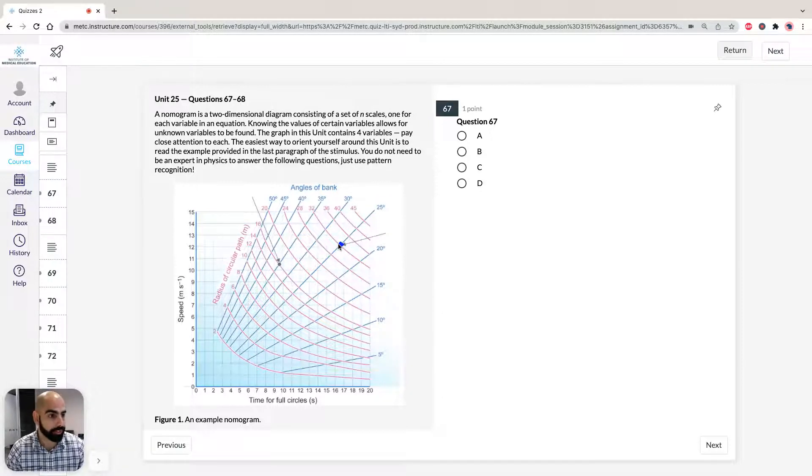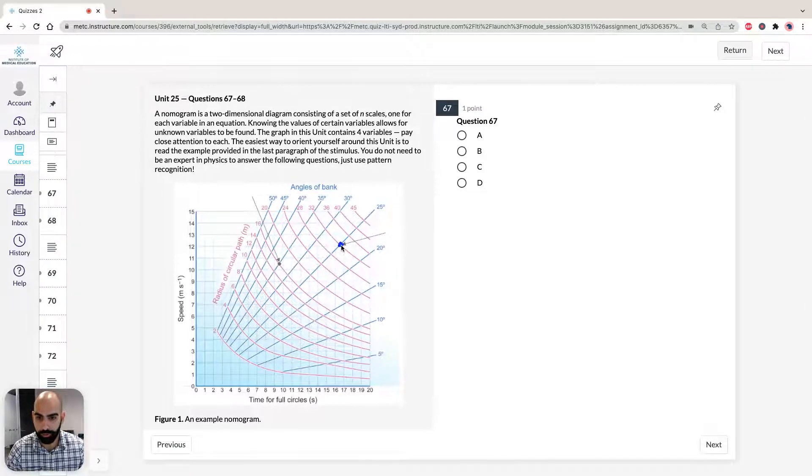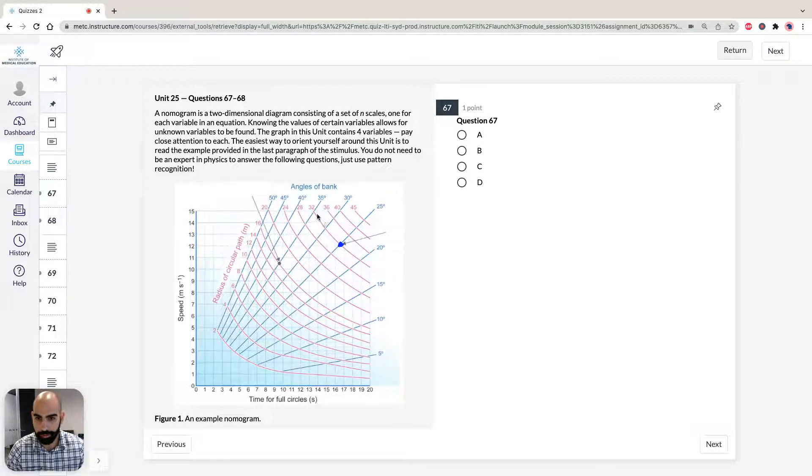Then it says, if the bird halves its radius of circular path and it increases its angle of bank by 10 degrees. So halves its radius. So we know that the radius, if we draw our dot here, is going to be 32. So the radius of circular path, therefore, has to be 16. So it has to be on this line here. And then it says we're going to increase our angle of bank by 10 degrees. So from 25 to 35. So angle of bank is going to be 35. Our radius of circular path is going to be 16. Therefore, we're going to draw our dot here.